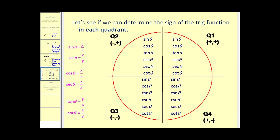Let's go ahead and look at determining the sign of the trig functions in each quadrant. On the left are the definitions of the trig functions in terms of x, y, and r. This is helpful in determining which are positive in which quadrant, because in the first quadrant x and y are both positive, and r is always positive. So in the first quadrant, all trig functions will be positive.